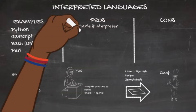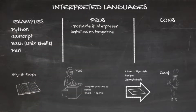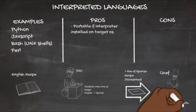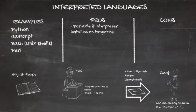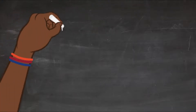As for the pros, the first is portability: you can run a program written in an interpreted language on another computer as long as that computer has the interpreter installed. Now, compiled languages can also be run on other computers, so both seem portable — but they're portable in different ways. This deserves its own diagram, so let's look at the general workflow for distributing a program written with an interpreted language.